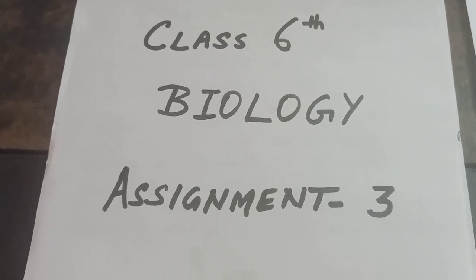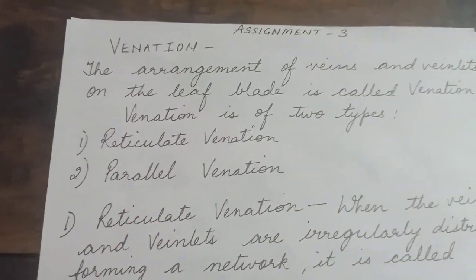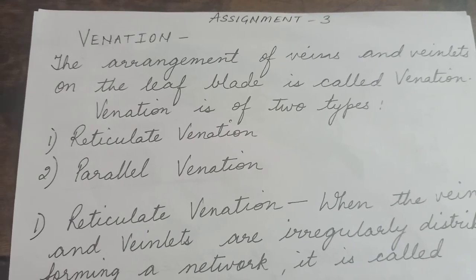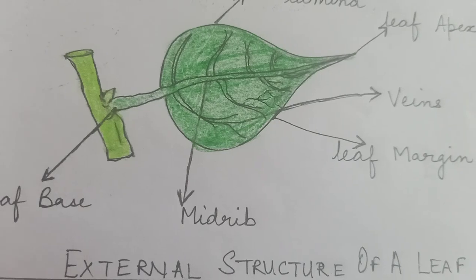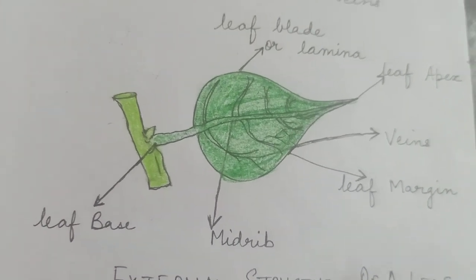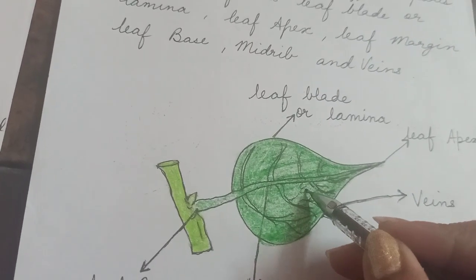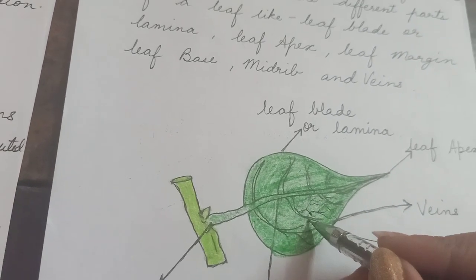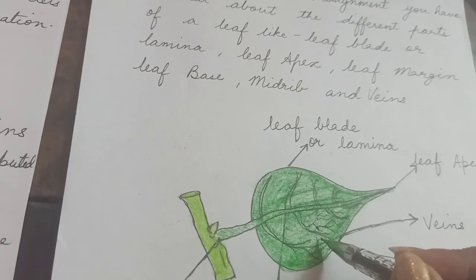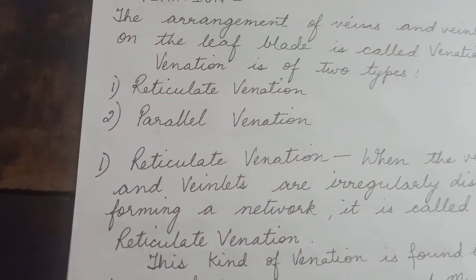First we see what is venation. This term venation is related to the leaf. The arrangement of veins and veinlets on the leaf plate is called venation. You can see the small veins in the diagram, and when these veins are distributed inside the leaves in the form of a network, these lines are known as veinlets. The arrangement of these veins and veinlets is known as venation.